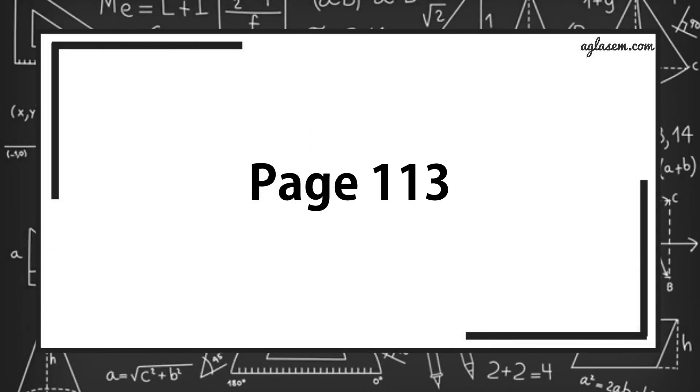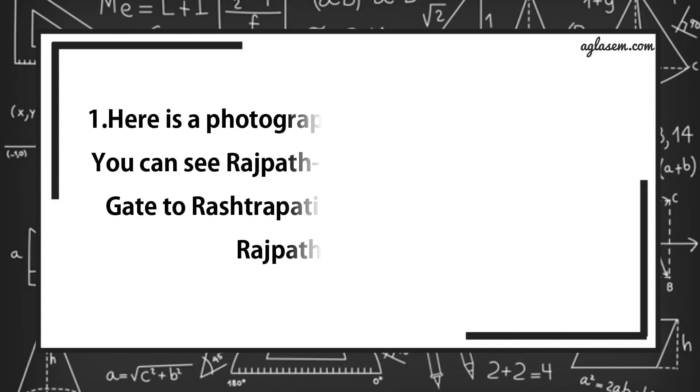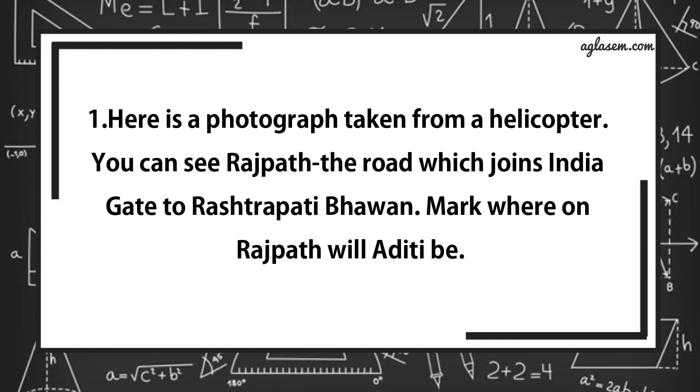Now turn to page number 113. Question number 1 says, here is a photograph taken from a helicopter. You can see Rajpath, the road which joins India Gate to Rashtrapati Bhavan. Mark where on Rajpath will Aditi be? So guys you can see the picture in your book.